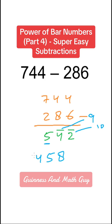You can do it mentally also. So this is our answer 744 minus 286 is 458. Let's do a couple of more.